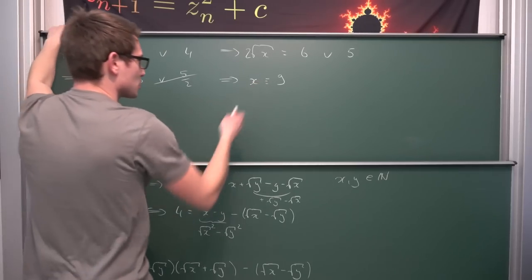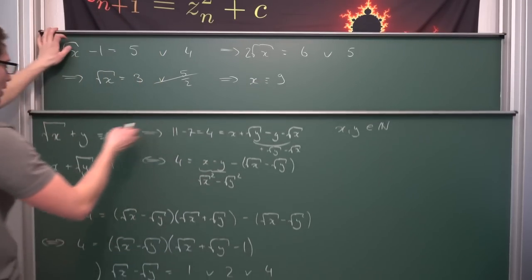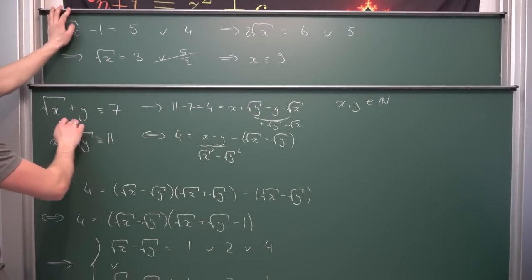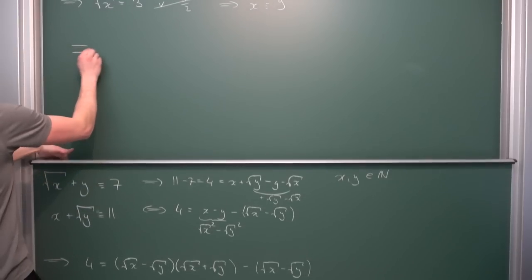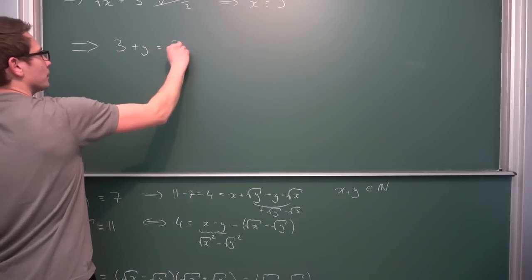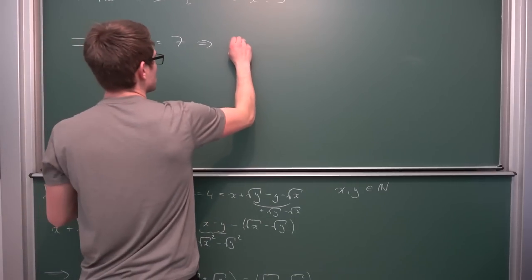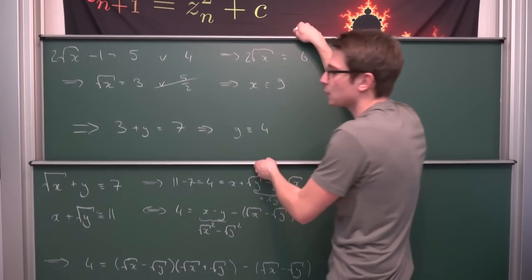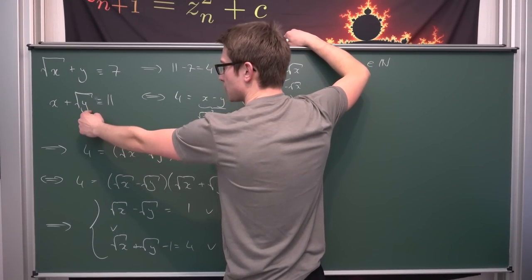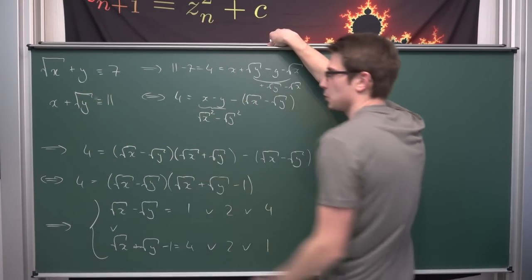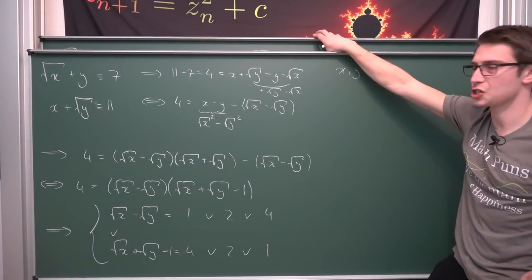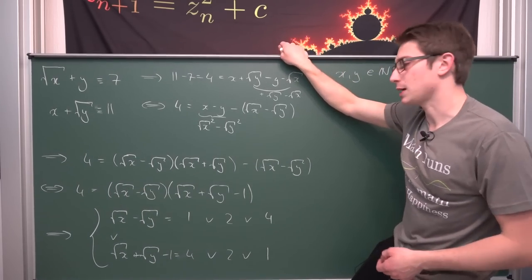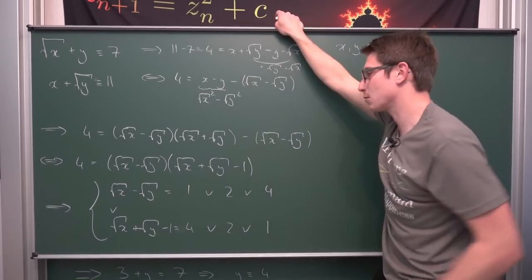Now we're basically done. We can plug the solution for x or square root of x into our equation. If we plug square root of x into here, we get three plus y equals seven, so y equals four. This also fits our other equation: nine plus square root of four, that's two, so nine plus two equals eleven, and that works out. I think that was a very elegant solution using factorization of the number four by using the difference of two squares.